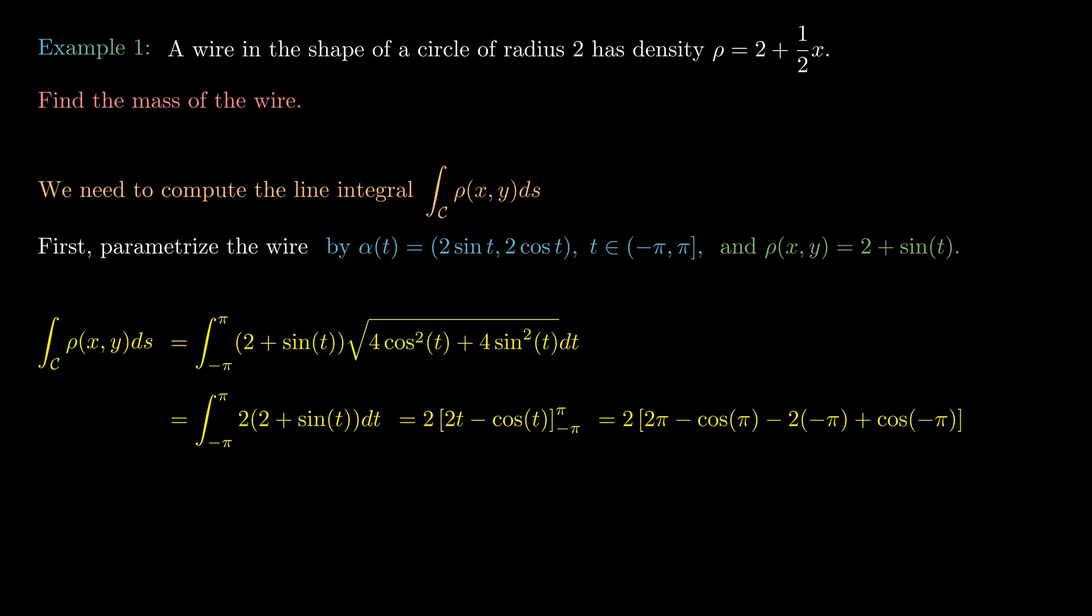Since cos(π) = -1 and cos(-π) = -1, we're left with 2[2π + 1 + 2π - 1] = 8π.